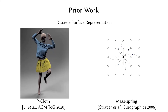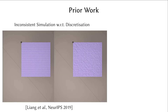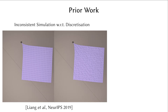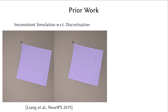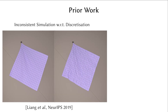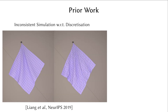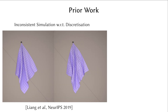Owing to discretization, simulations at different mesh resolutions are inconsistent with each other. This limits the simulators from offering adaptive sampling to downstream tasks that query or modify the simulated states.